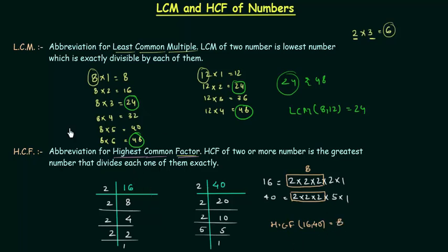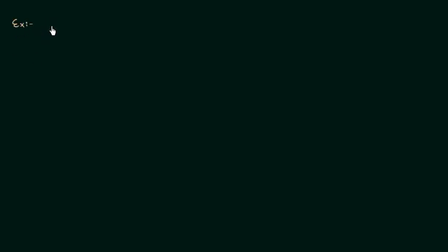I used these examples to explain LCM and HCF, and now you know what LCM and HCF are. We can move to shortcut methods which will save time in exams. I will explain two shortcut methods with the help of examples. The first example is on HCF — we have to find out HCF of 28 and 42.